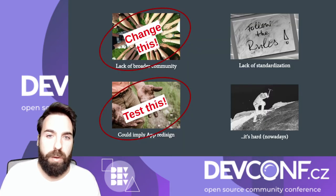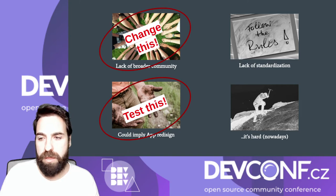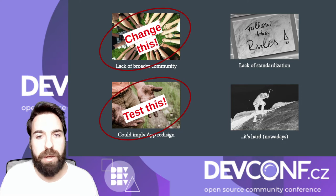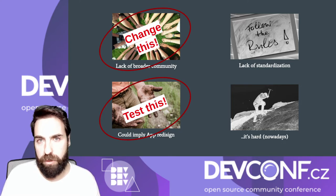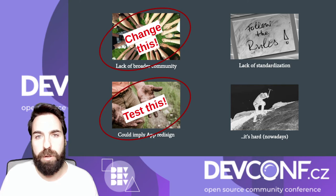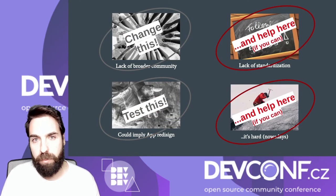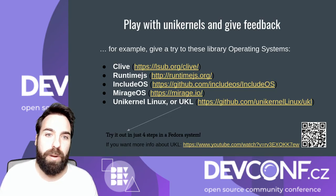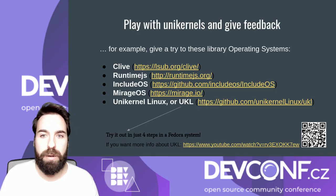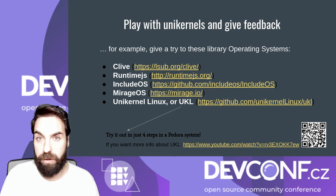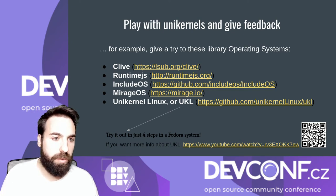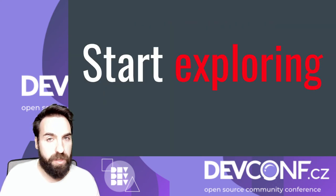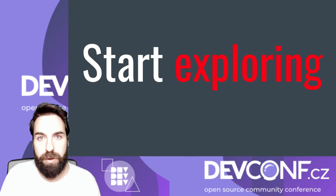So what do I want from this talk? I want to change this. I want to create a community — I want you to start playing with Unikernels and give feedback to the tools you are using, helping to consolidate a community around Unikernels. If you can help others, that would be great. You can start playing with any of the multiple library operating systems out there. I would recommend starting with Unikernel Linux, which is just four commands if you have Fedora. Start exploring the benefits of Unikernel apps. Thank you.